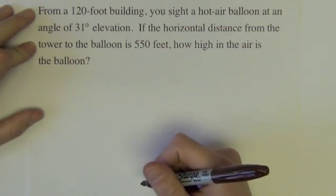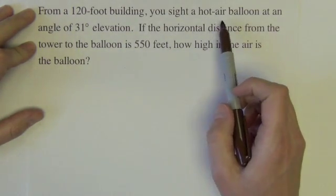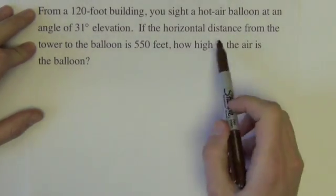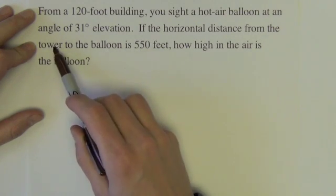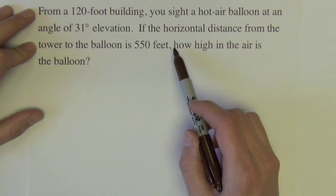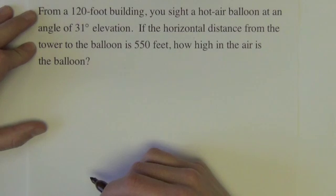Next, from a 120-foot building, you sight a hot air balloon at an angle of 31 degrees elevation. Horizontal distance from the tower to the balloon - I guess that shouldn't say tower, it should say building. From the building to the balloon is 550 feet. How high in the air is the balloon?